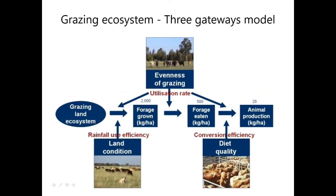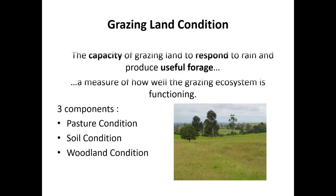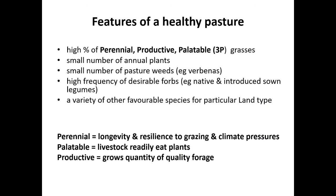The three gateways model has been used to represent a grazing ecosystem — how efficiently the ecosystem captures sunlight, utilises rainfall and cycles nutrients to grow pasture for animal production — and this is largely influenced by our grazing management. For the rest of the talk we'll concentrate mainly on the land condition gateway. Grazing land condition is basically the capacity of an area of grazing land to respond to rain and produce useful forage — a measure of how well our grazing ecosystem is functioning. It's made up of three components: pasture condition, soil condition and woodland condition.